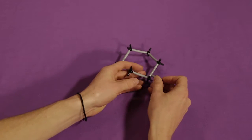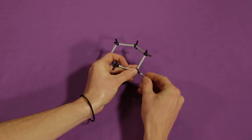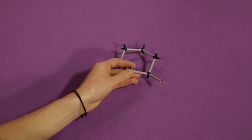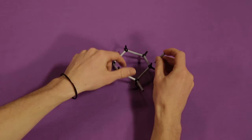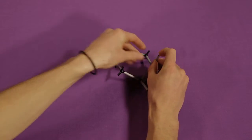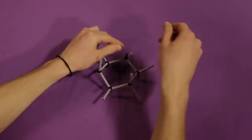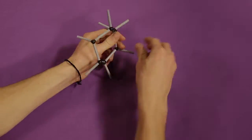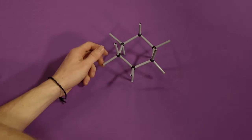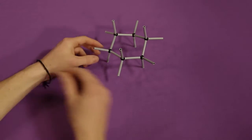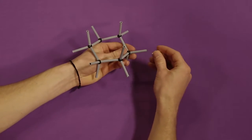After creating a ring of carbon atoms, attach two more bonds to each carbon. Attach a hydrogen atom on the other end of each bond.